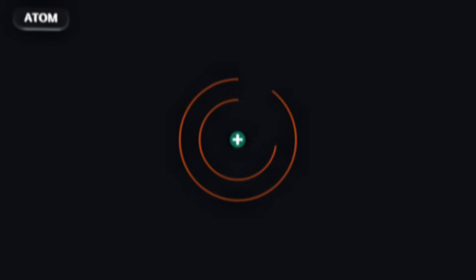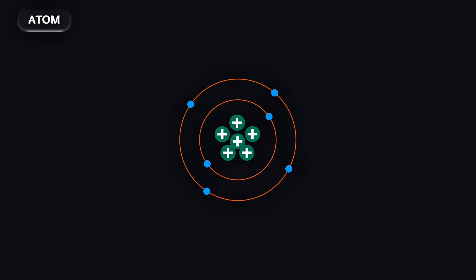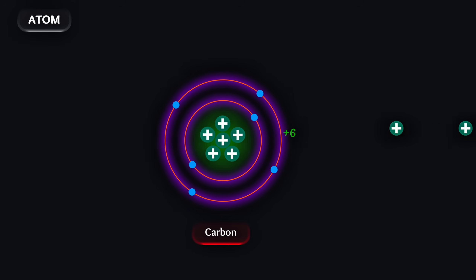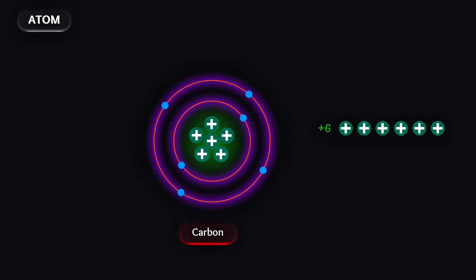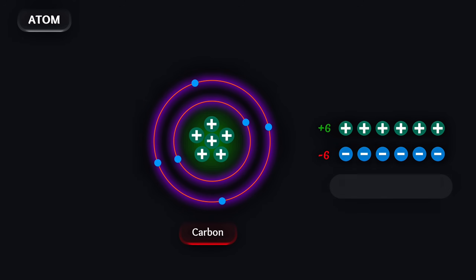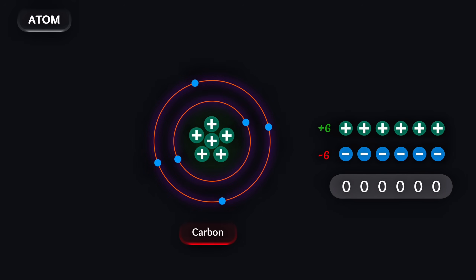In nature, the number of electrons in an atom is equal to the number of protons. Protons have a positive charge, and electrons have a negative charge. To balance charges, they occur in equal numbers, making the atom neutral. For example, a carbon atom has 6 positive charges from protons and 6 negative charges from electrons — these charges cancel out, so the overall atomic charge is 0.